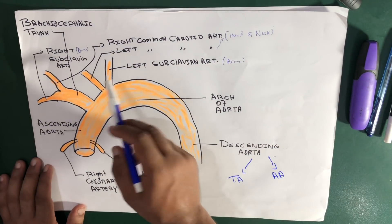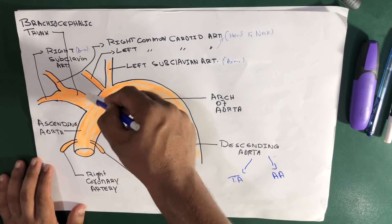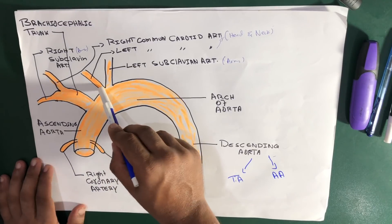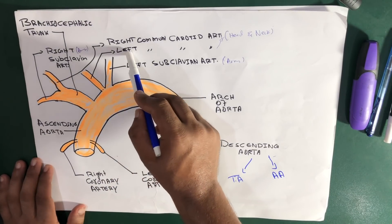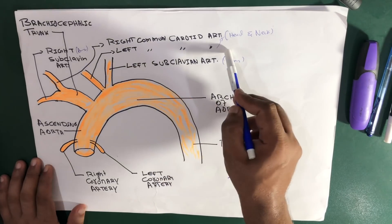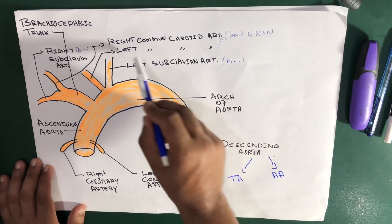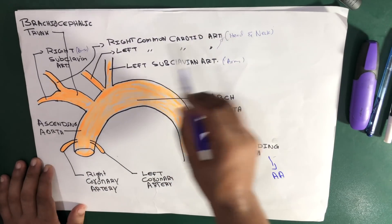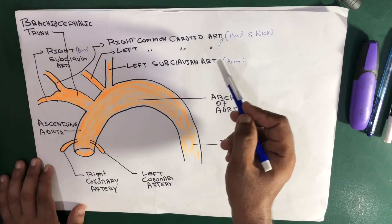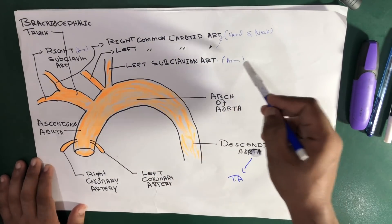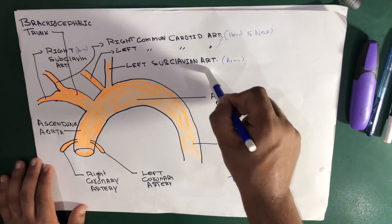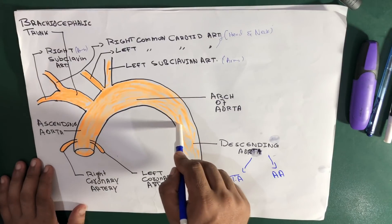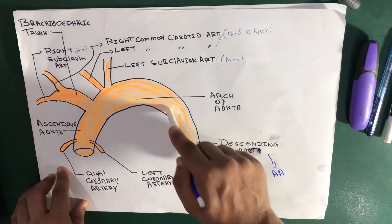The other two branches of the arc of aorta — not part of the brachiocephalic trunk — are the left common carotid artery and the left subclavian artery. The left common carotid artery supplies the head and neck on the left side, and the left subclavian artery supplies the left upper limb.